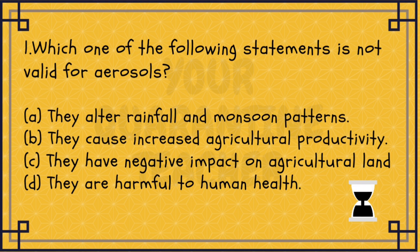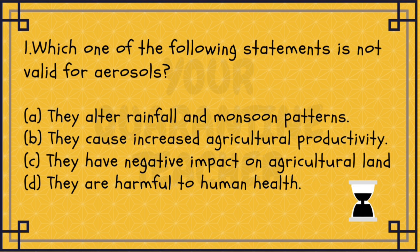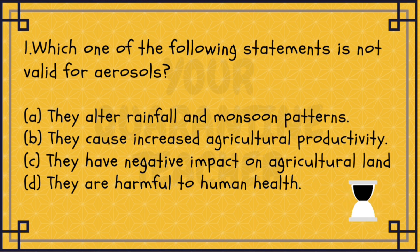Option A: They alter rainfall and monsoon patterns. Option B: They cause increased agricultural productivity. Option C: They have a negative impact on agricultural land. Option D: They are harmful to human health.